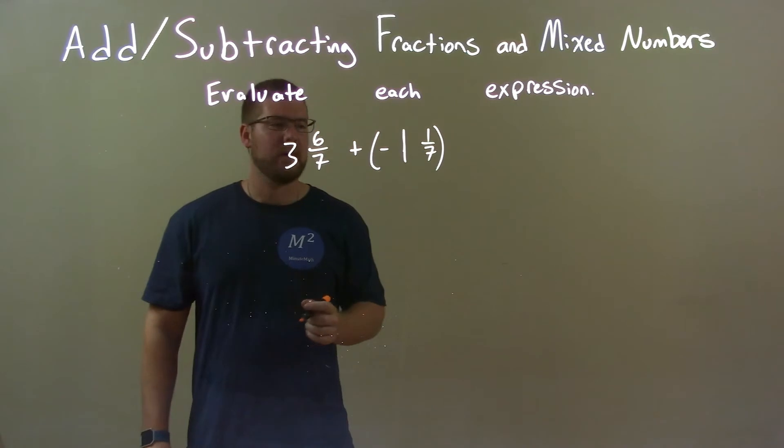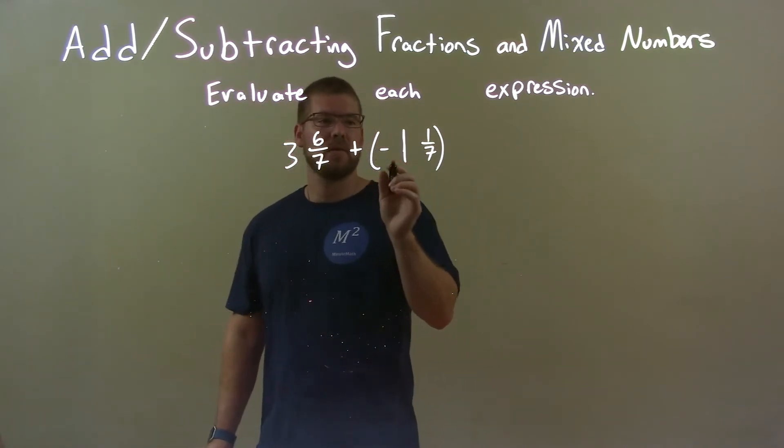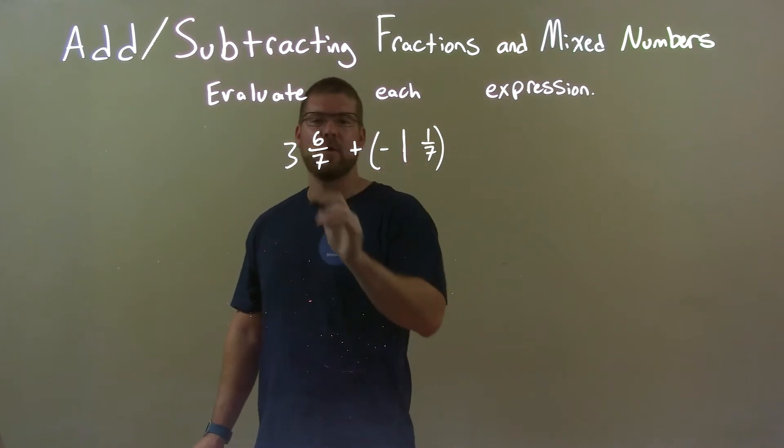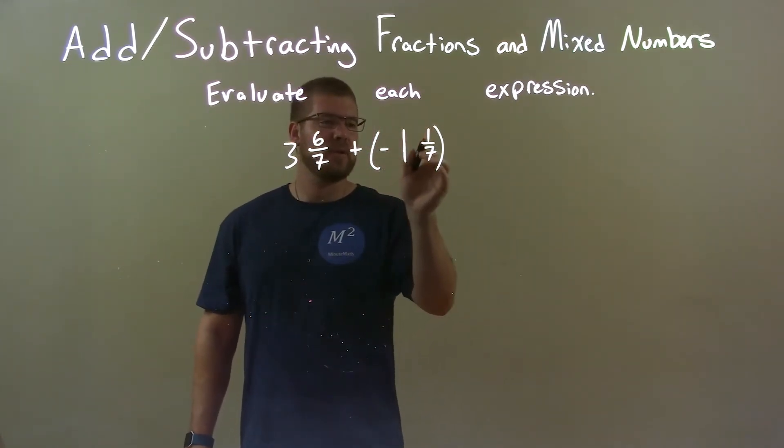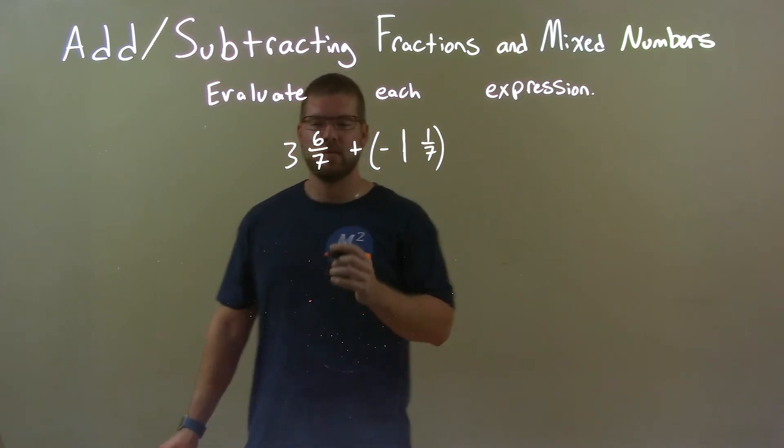What we can do here is combine the whole number parts and the fraction parts. When we do that, we make sure this negative gets distributed to the fraction. Sometimes I like to write it like this.